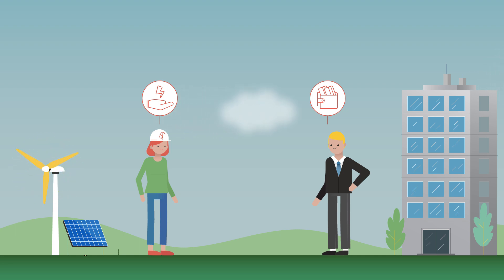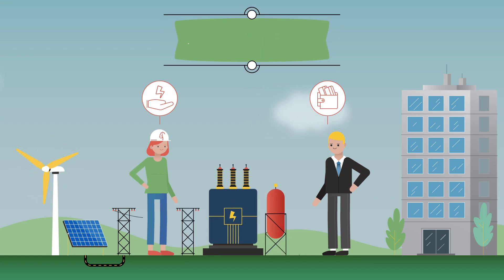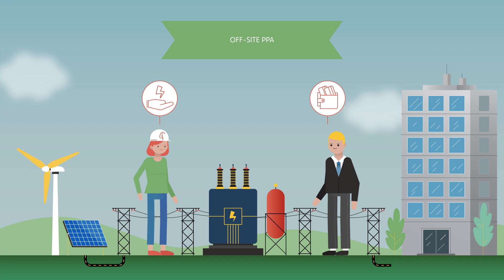There are two basic types of PPA by location. Off-site, where the client receives electricity from a project connected to the grid, but not necessarily close by.